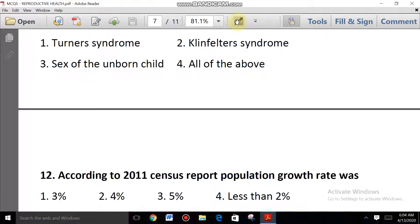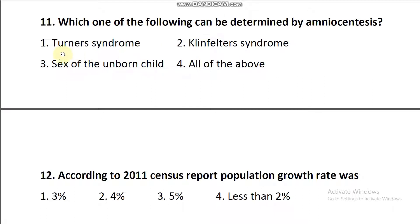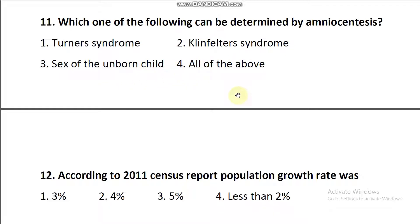The first option is Turner syndrome, second option Klinefelter syndrome, third option sex of the unborn child, and fourth option all of the above. The answer is all of the above — Turner syndrome and Klinefelter syndrome should be identified, and sex determination is also identified. So the answer is all of the above.